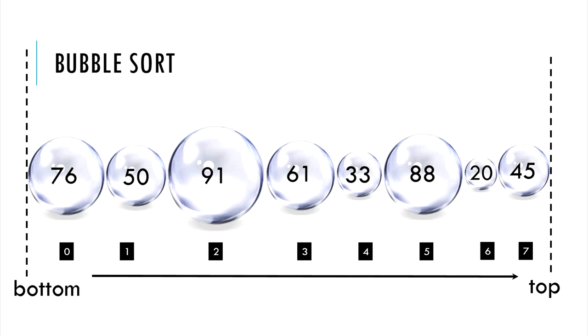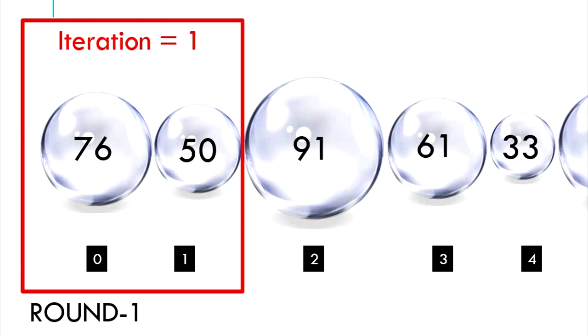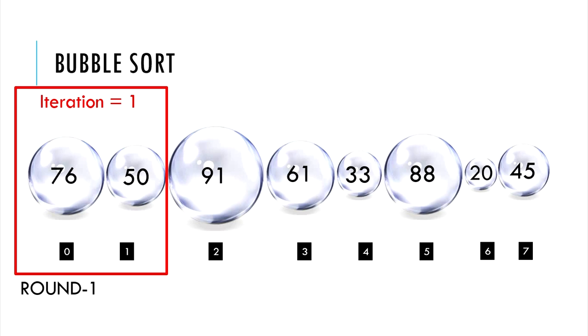Let's begin our loop, round one and iteration one. We are looking at the index 0 element and index 1 element. Is the element at index 0 greater than at index 1? Yes. So let's swap them.